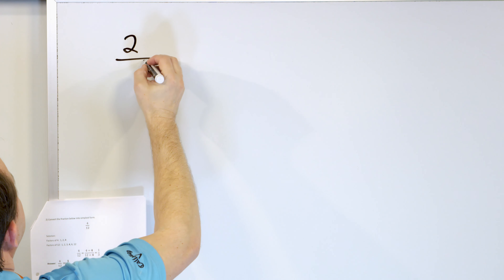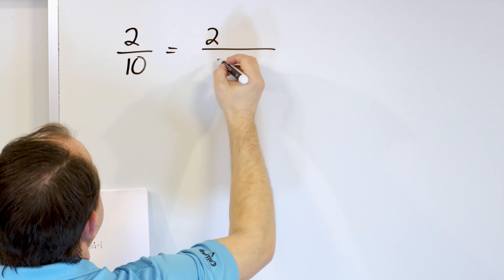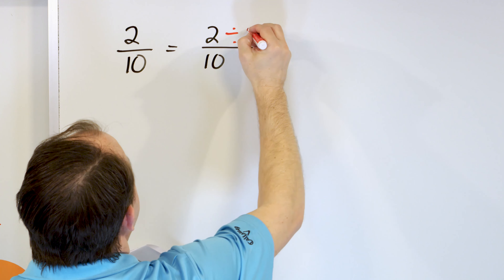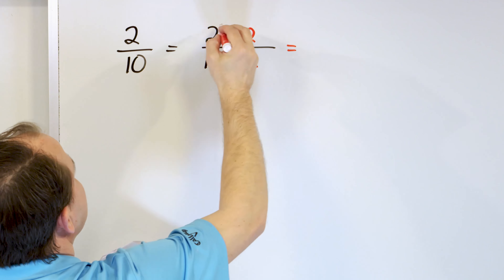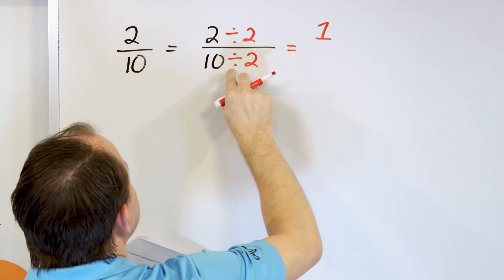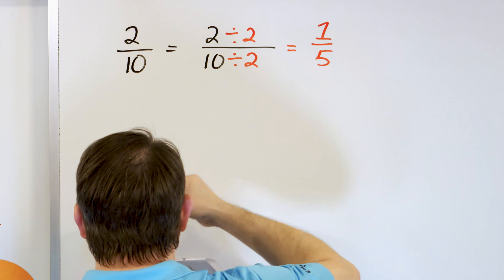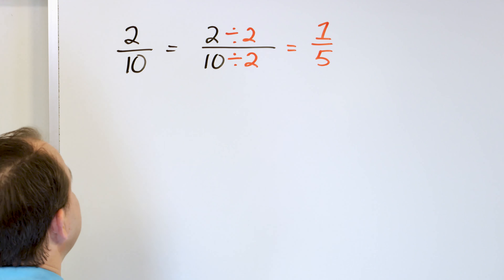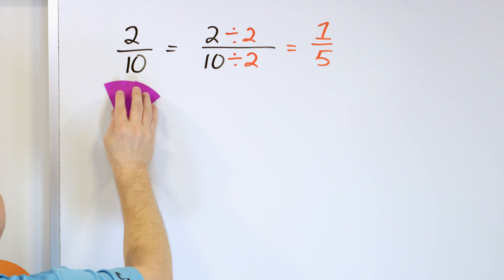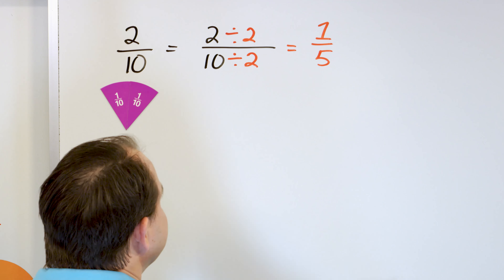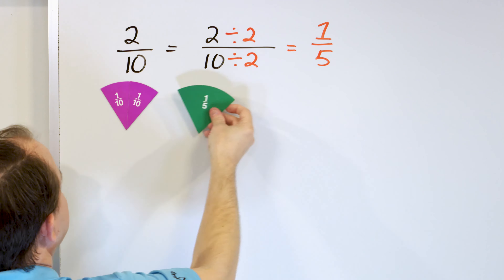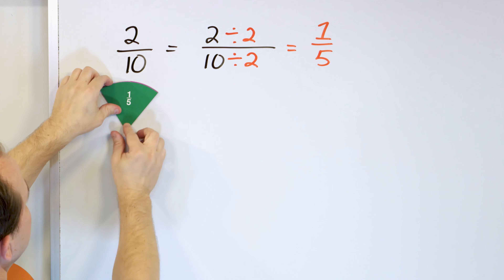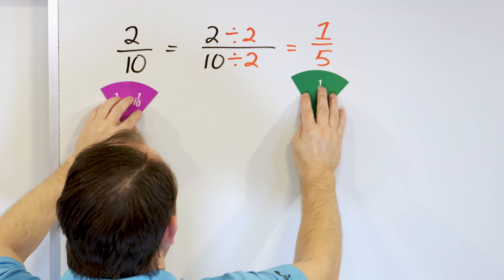Let's take a look at the problem two-tenths. How do we simplify that? We rewrite the fraction as two over ten. What can we divide top and bottom by? I can divide the top and bottom by two, because both are divisible by two. Two divided by two is one. Ten divided by two is five. So the fraction one-fifth is exactly the same thing as two-tenths. Here's one-tenth, two-tenths — and we can see that one-fifth placed on top matches exactly. They're exactly the same thing.